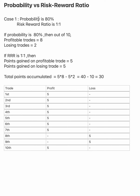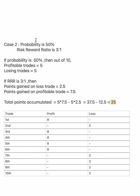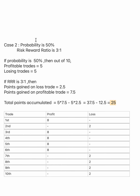Now see the difference: where the risk reward is less but the probability is more, we are having more points — 30. And where the probability is less but the risk reward is high, we are having less profit — only 25. This shows how probability defines trading outcomes. We should never ignore probability; we can't make a decision based only on the risk reward ratio.